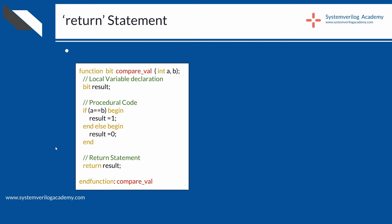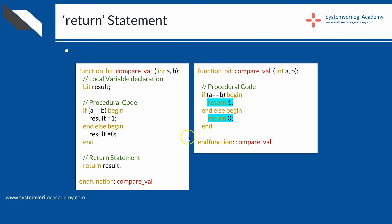In a function, you can specify a value to be returned to the calling place along with the return statement. But in a task, it cannot return any value and can be added only to stop execution of the task before its end. Here, the same example from the previous slide is written in a simplified manner using multiple return statements. If both a and b are equal, the return statement stops execution of the function immediately and the below statements will not be executed.